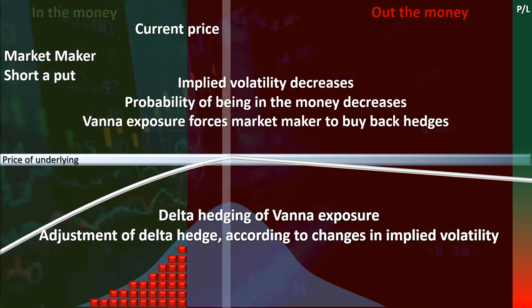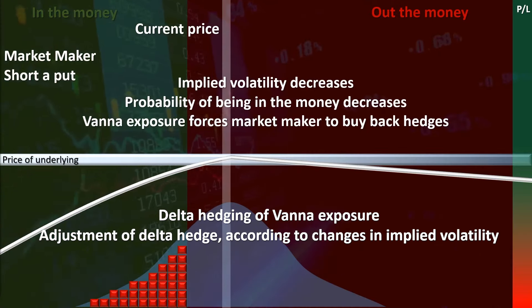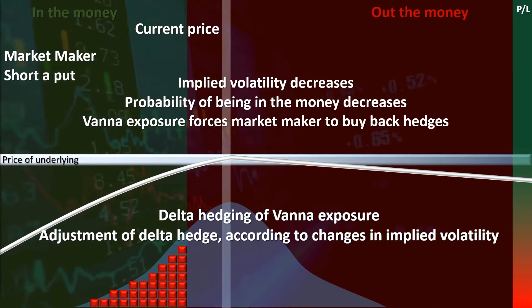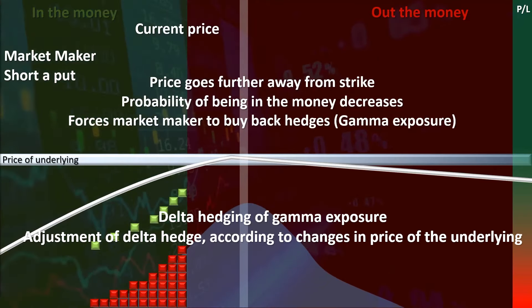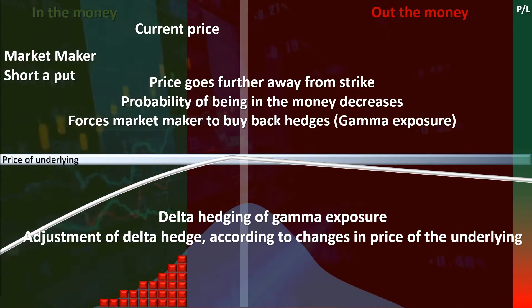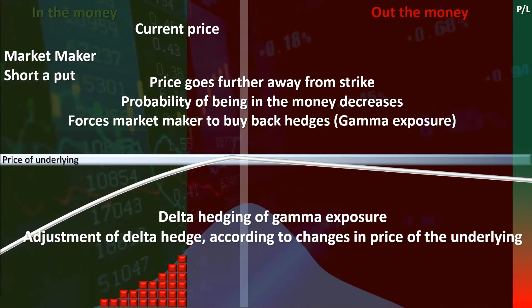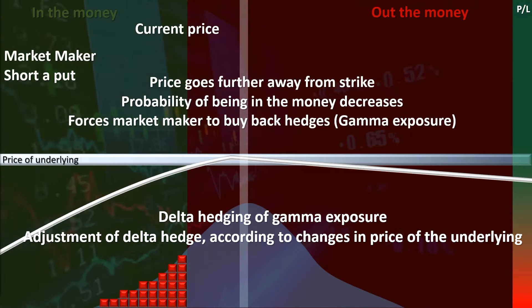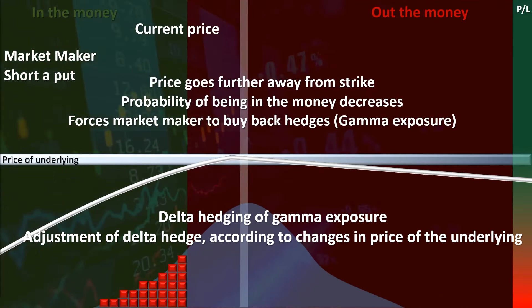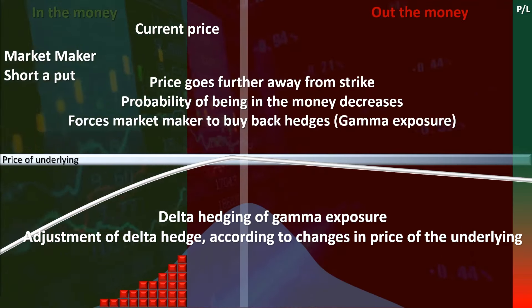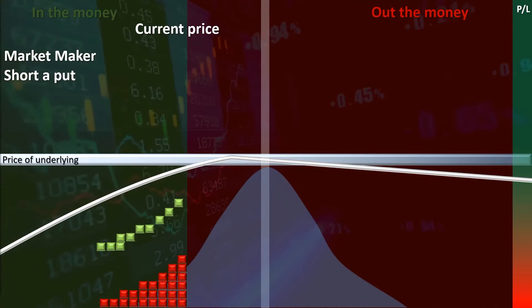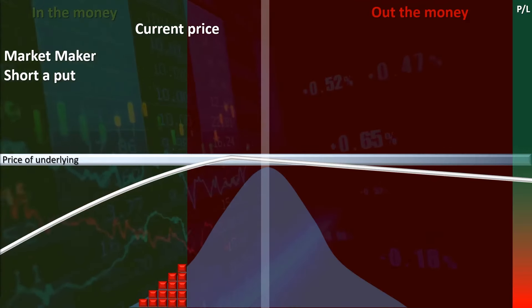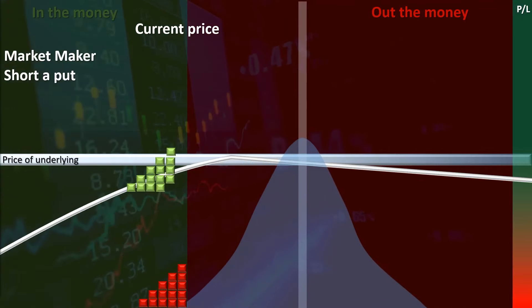The effect of market makers delta hedging both their Vanna and Charm exposures by buying stock can push up the price of the underlying, provided that the market has bought enough options. This increase in price itself also reduces the probability that these puts will go in the money, which is another way to think of gamma exposure — that is, gamma exposure is the change in probability that an option will expire in the money according to changes in the underlying price. Thus market makers must delta hedge their gamma exposure by buying more stock in this situation. These increases in price can help further reduce implied volatility, which when coupled with the simple passing of time and the slow pushing up of prices that all this delta hedging can cause, means that market makers are effectively supporting the markets constantly until the options expire.